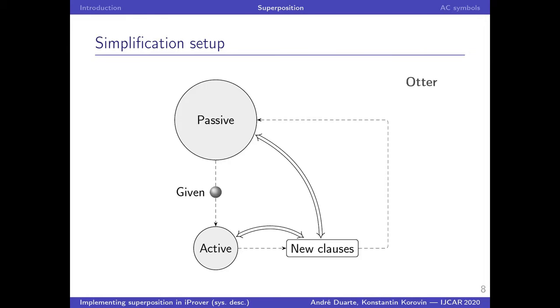So a naive architecture for simplifications is the so-called Otter loop, where we simply simplify all newly derived clauses with respect to every previously kept clause forwards and backwards. It was quickly realized that in most runs this meant spending the vast majority of time simplifying clauses in the passive that may not even end up being used ever. So after some time, the prover spends almost all of the runtime just doing these simplifications that will be useless.